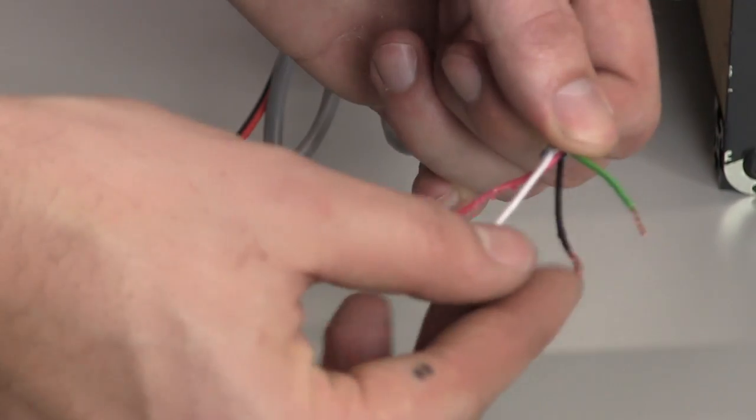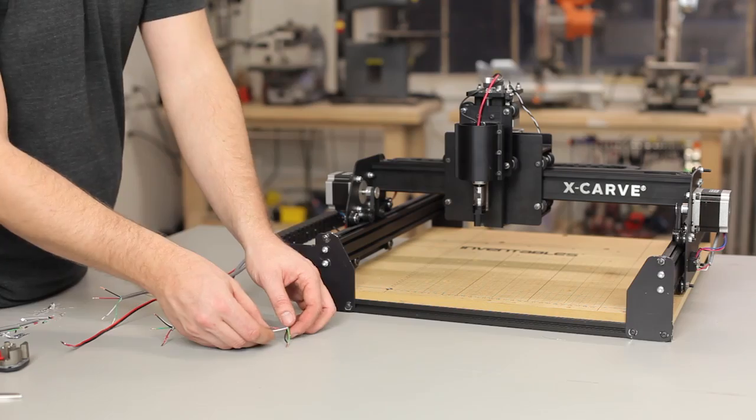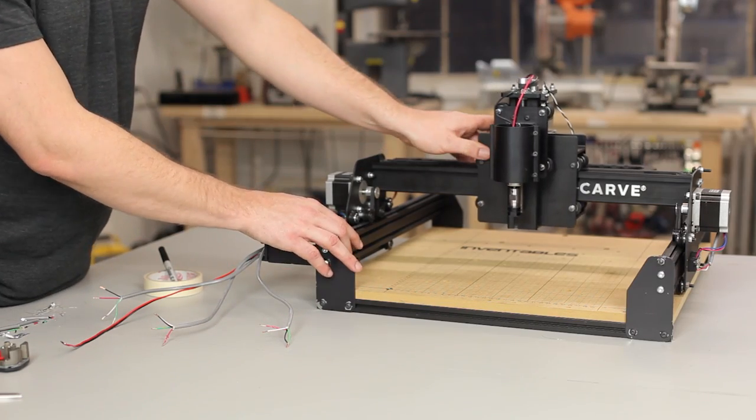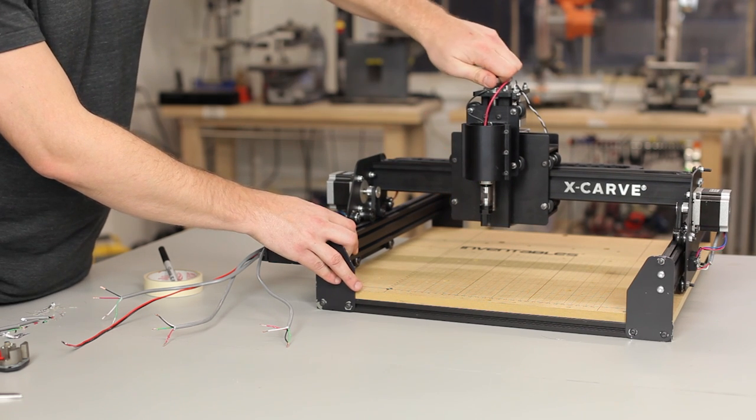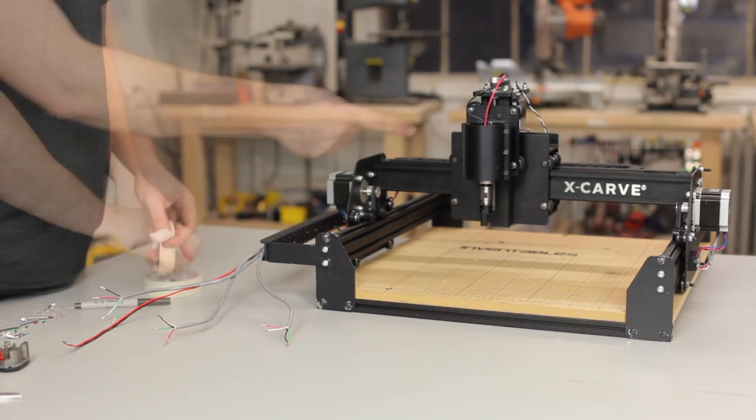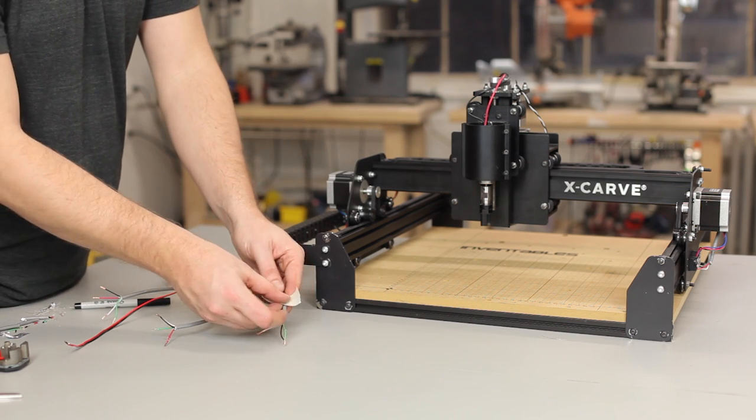Take one stepper cable and twist the black and green wires together. Then try to move each axis and see which one gives you resistance. You can see here that the Z axis gave me resistance.